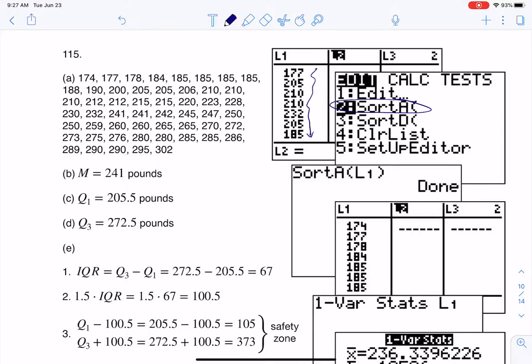But then I use the sort feature in my calculator. Instead of stat edit, which we do a lot, I'm going to go stat 2, and I'm going to say, can you sort it? And then it actually puts it in order for me from smallest to largest. And that's where you see me copying over here. It's still tedious because there's so many data values, but at least my calculator will do that for me.